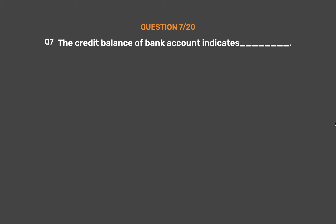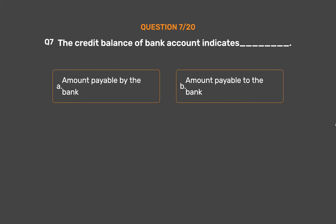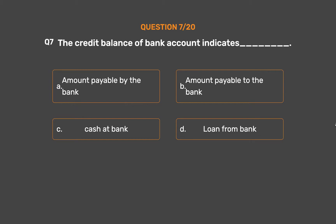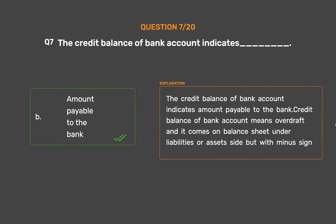Question number seven: the credit balance of a bank account indicates — Option A: amount payable by the bank. Option B: amount payable to the bank. The correct answer is option B: amount payable to the bank. A credit balance of a bank account means overdraft, and it appears on the balance sheet under liabilities, or on the assets side with a minus sign.